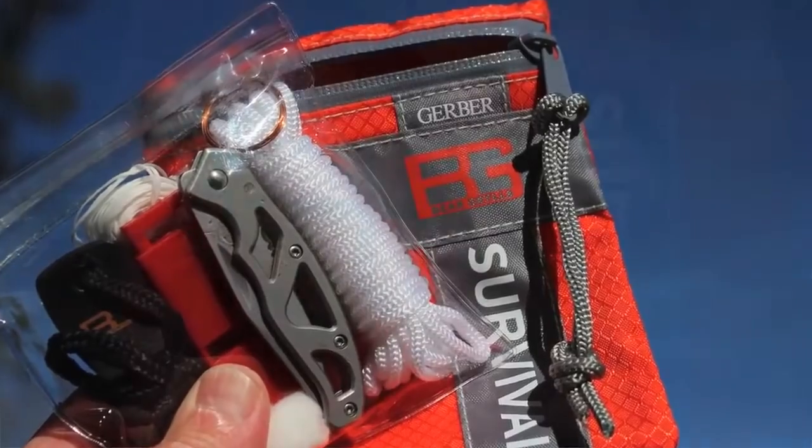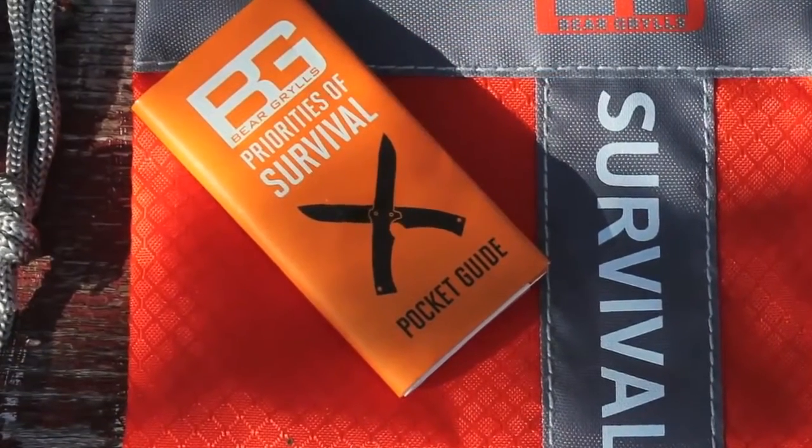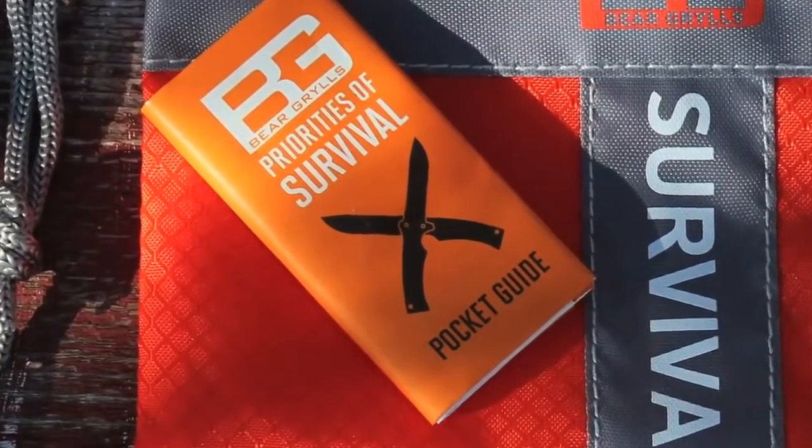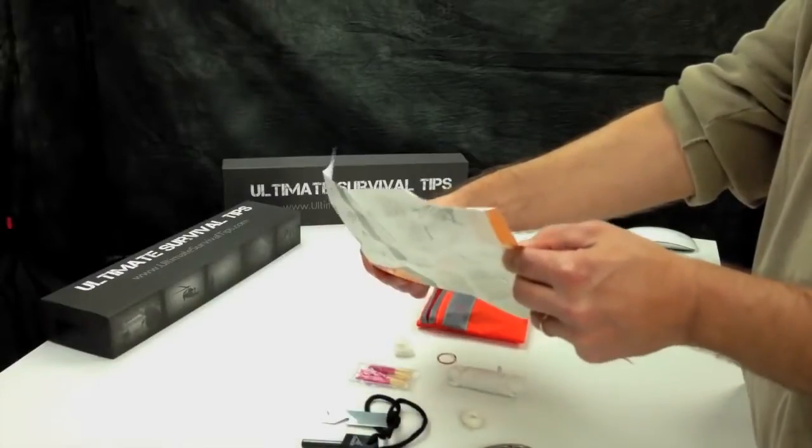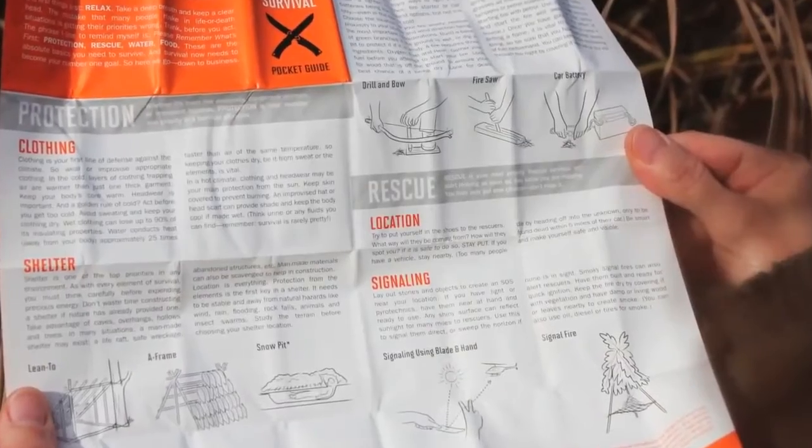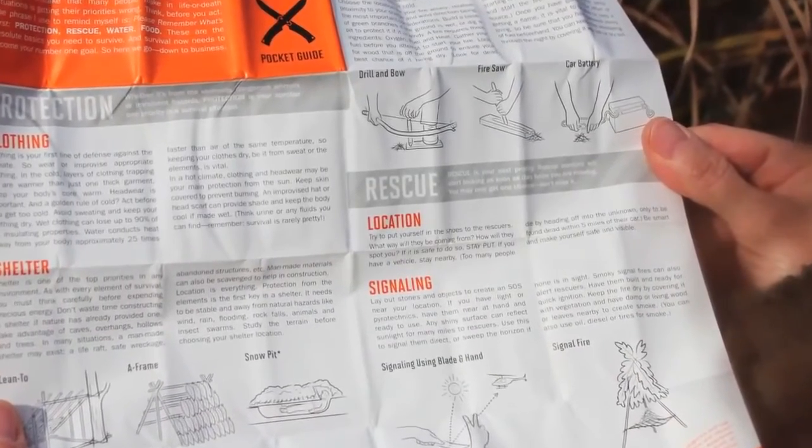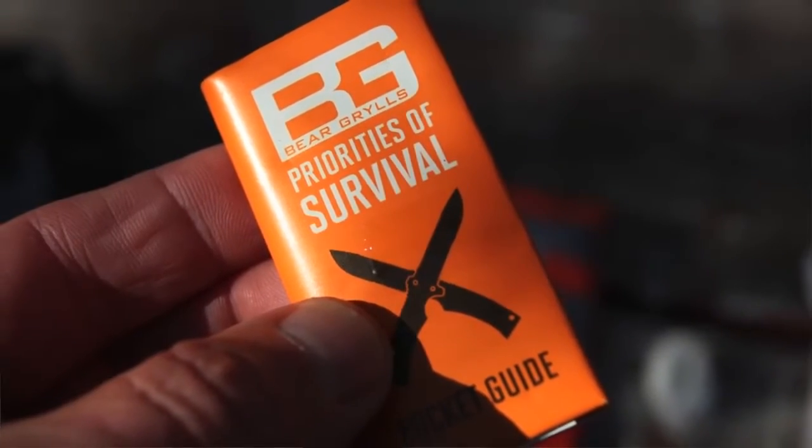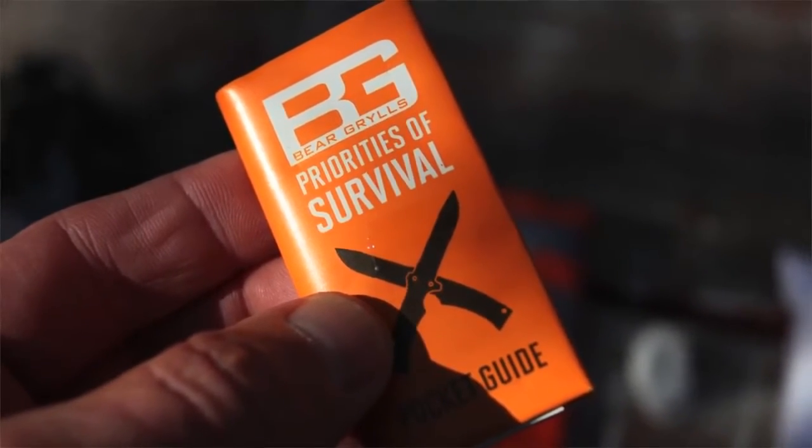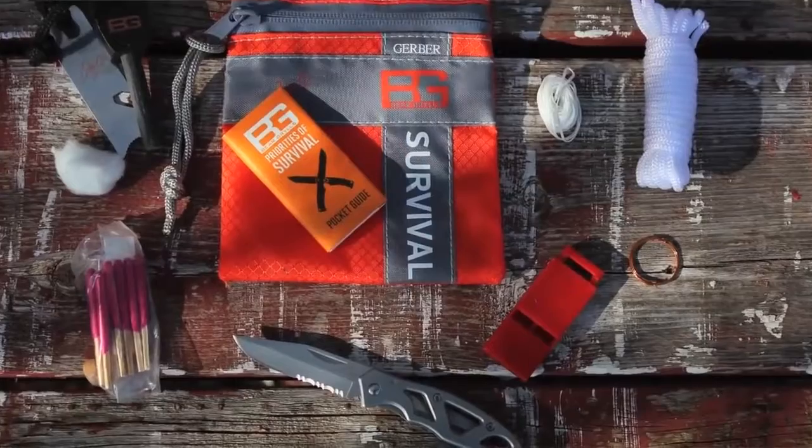As with all the gear in the Bear Grylls lineup, the basic survival kit comes with the often overlooked Bear Grylls Priorities of Survival pocket guide. This pocket guide does the heavy lifting for those who don't have time or desire to learn the intricacies of basic survival and rescue. Even a novice adventurer can read this guide and be a little better prepared if disaster strikes unexpectedly.